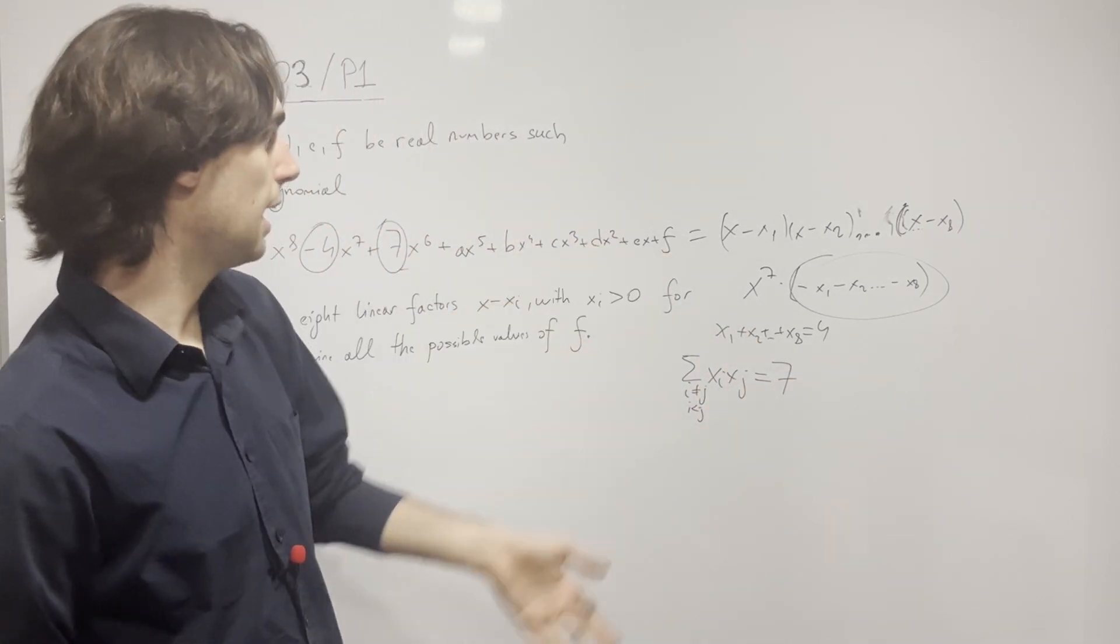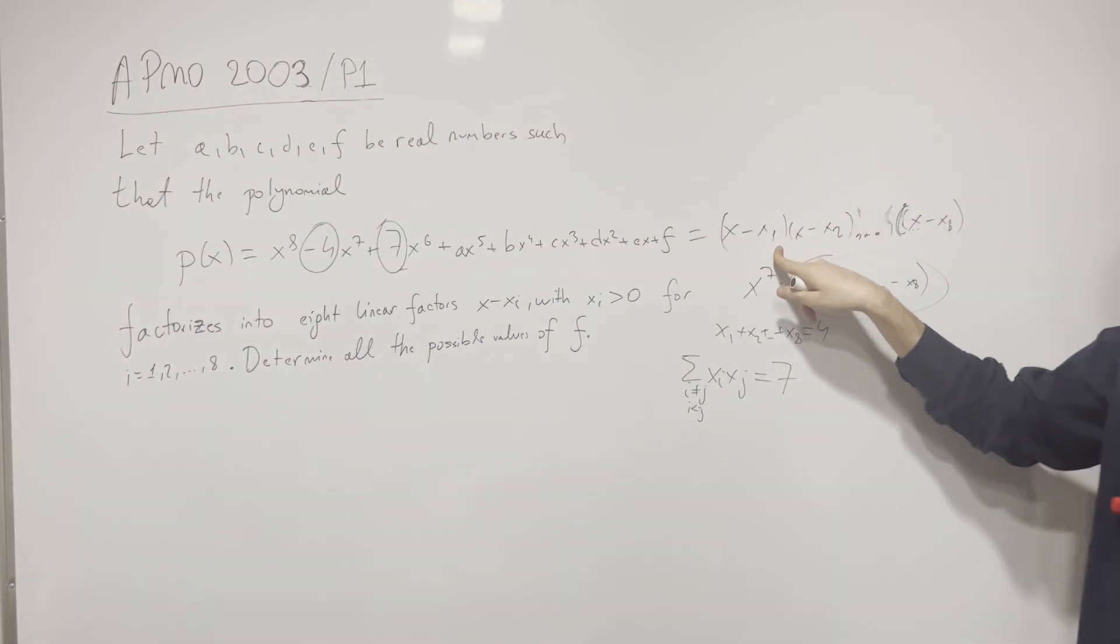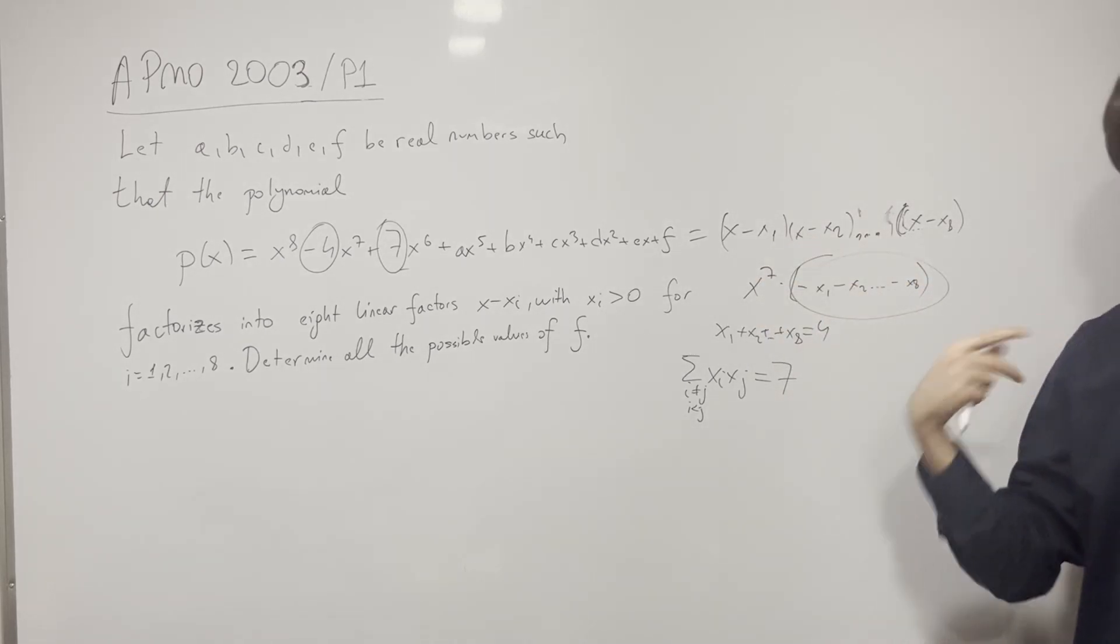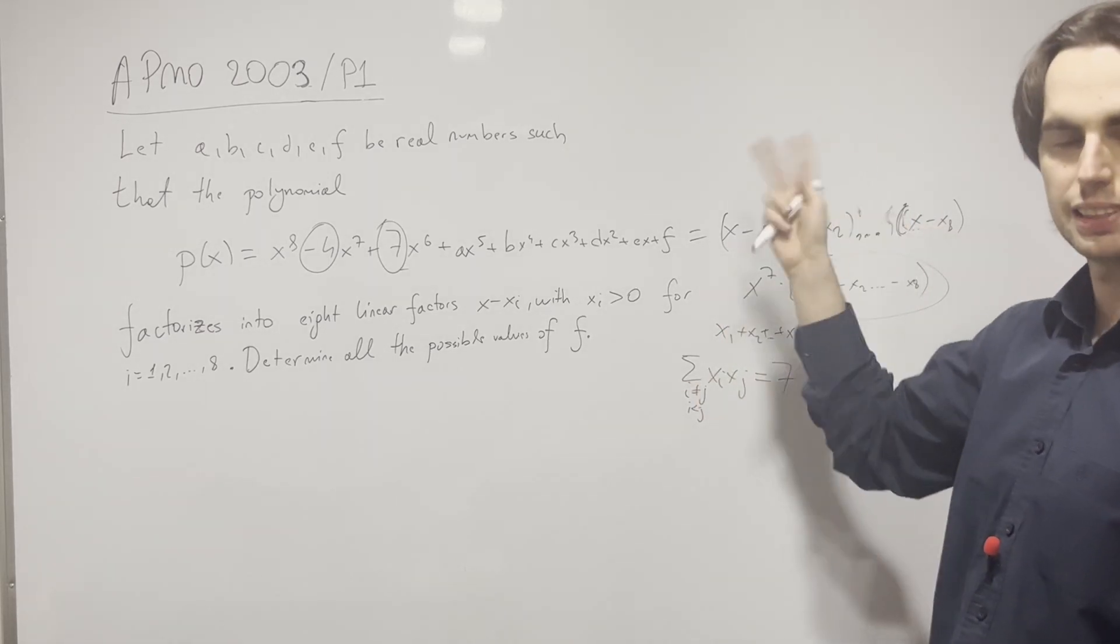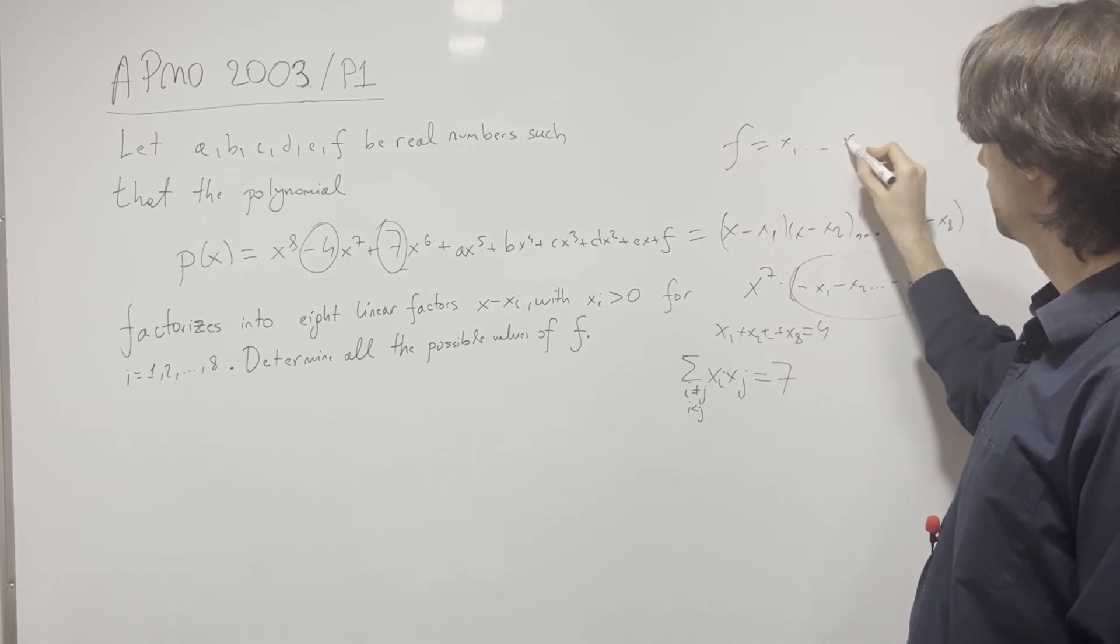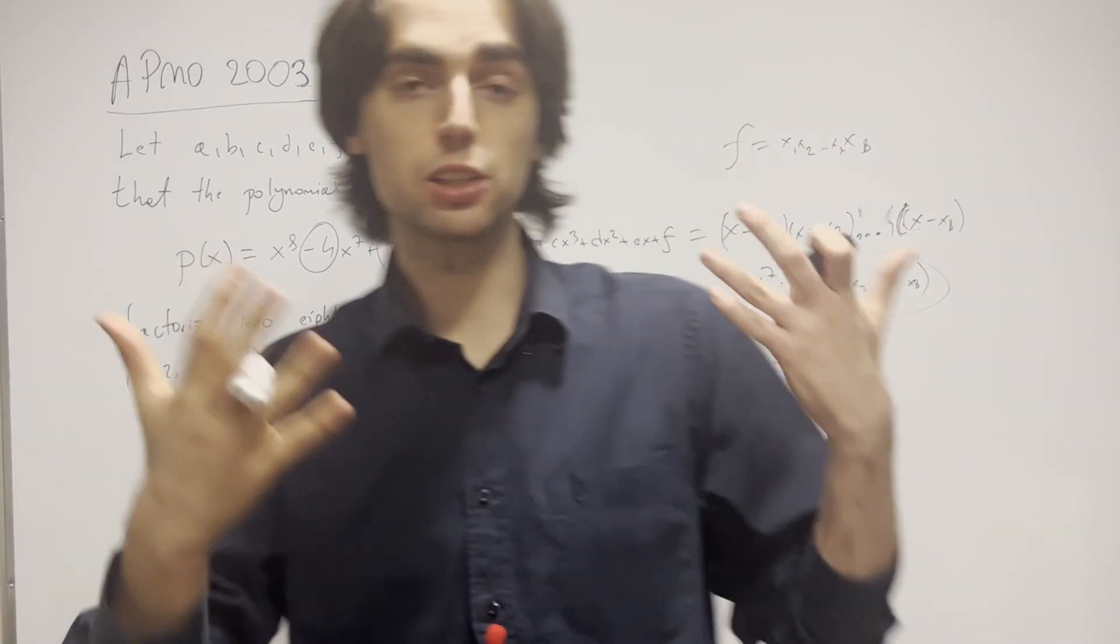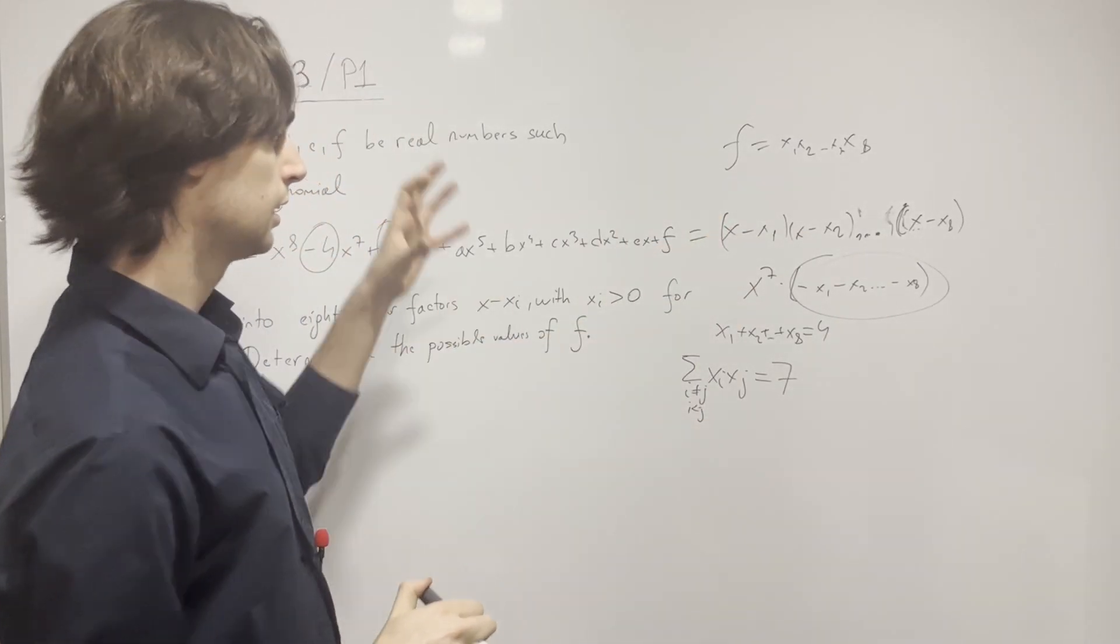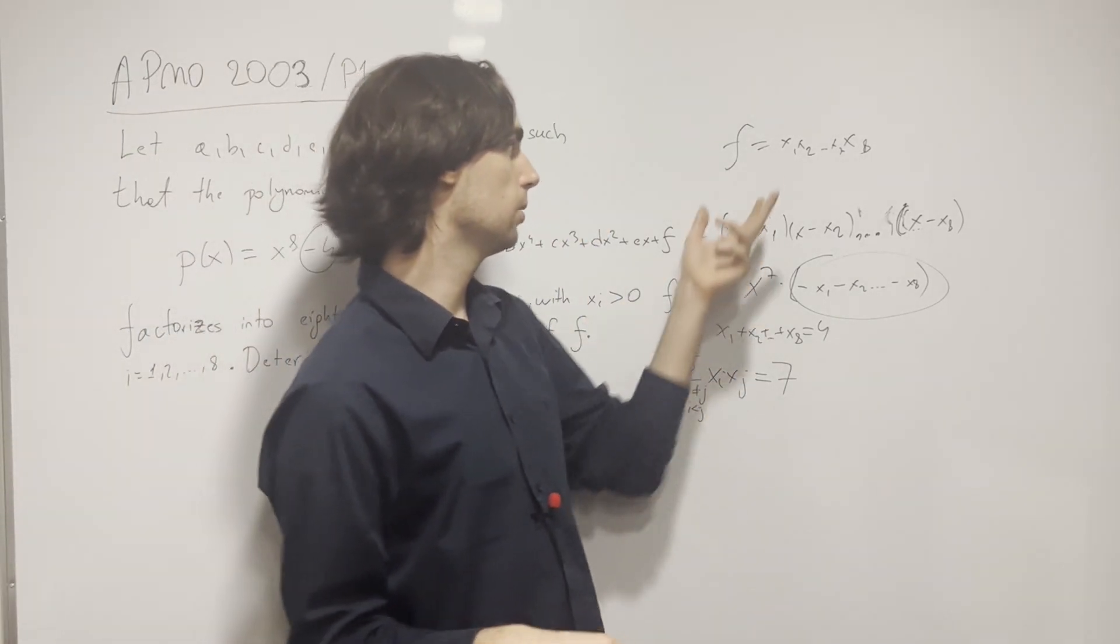And we have f is going to be the product of all of these roots. It's going to be the positive product because x1 times x2 times x3 times x4 times x5 times x6 times x7 times x8, and we get that f equals the product of these roots. This is by Vieta's rules. So now given we have these pieces of information and that all the xi are greater than zero, how do we get to this?